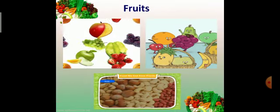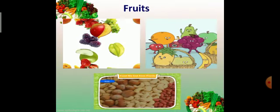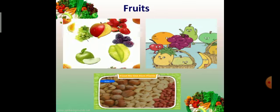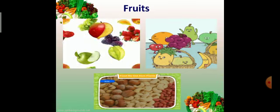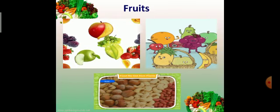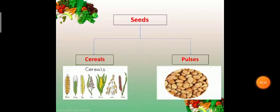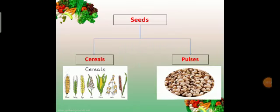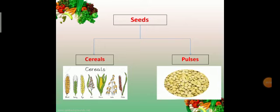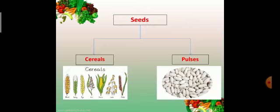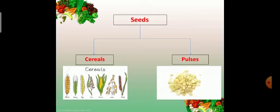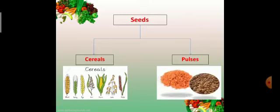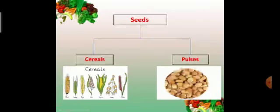We also get nuts from plants. Nuts also helpful for our health. Cashew nut, almond, walnut, etc. Seeds. S-double-E-D-S seeds. We eat seeds of some plants as food. Seeds are of two kinds. Cereals and pulses. Cereals and pulses together are called food grains.